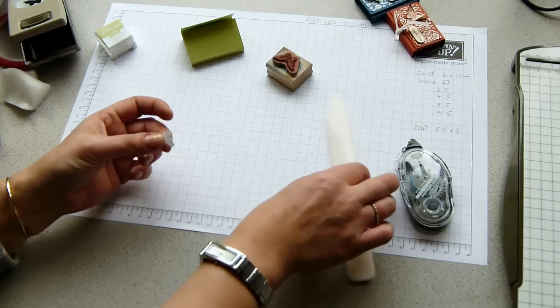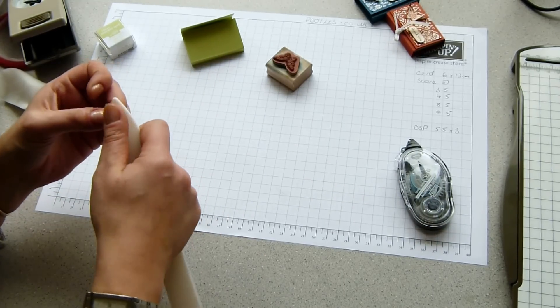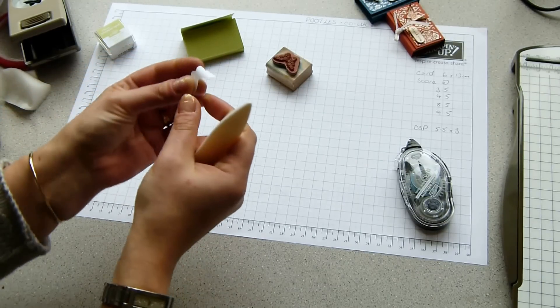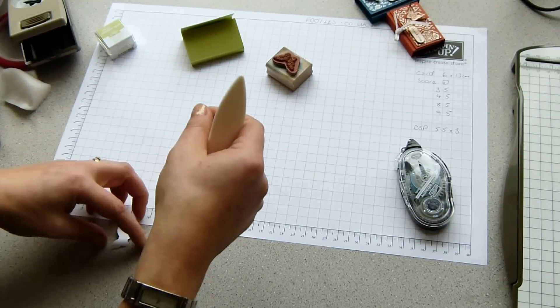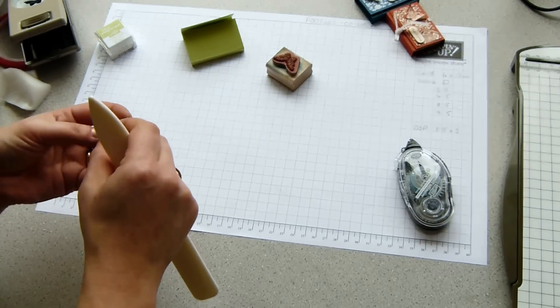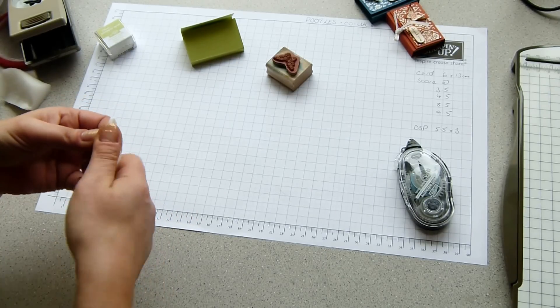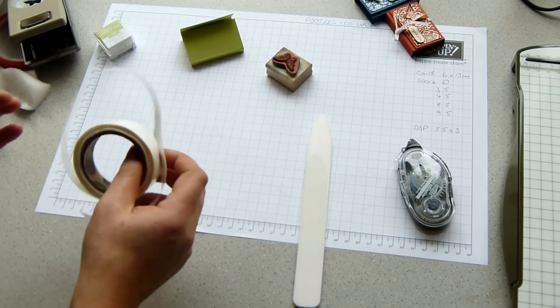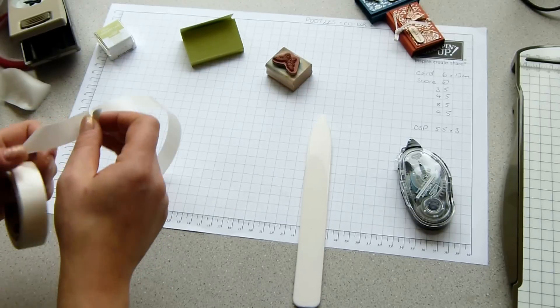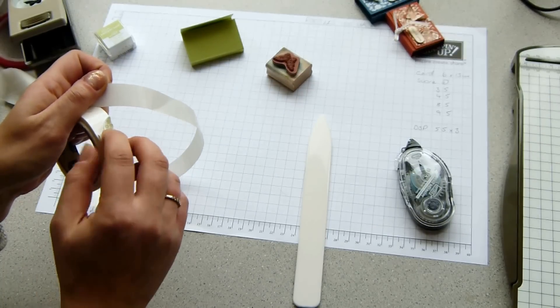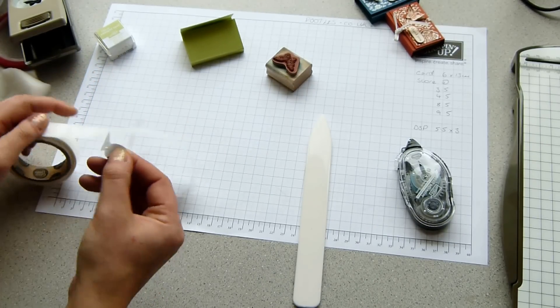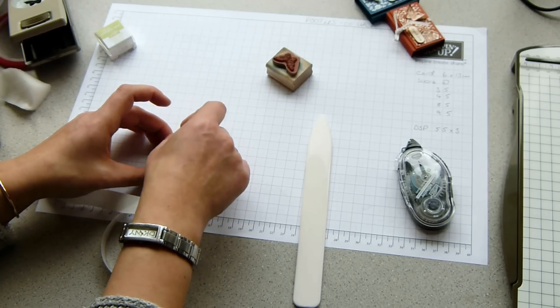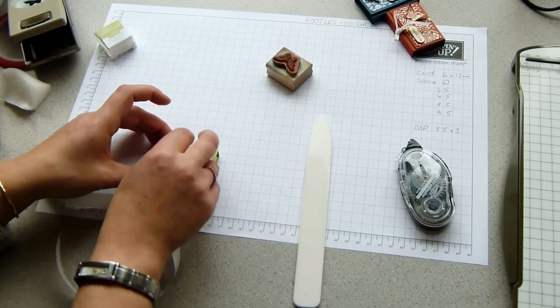And then I'm going to curl the edges. And all you do is you just use your bone folder and holding it one side, just curl over the edges. And it just lifts the wings up a little bit. And then I've got some mini dots, mini glue dots. It's a very strong glue, but it's already dried for you. Pop that up there in the corner so the little butterfly can fly away.